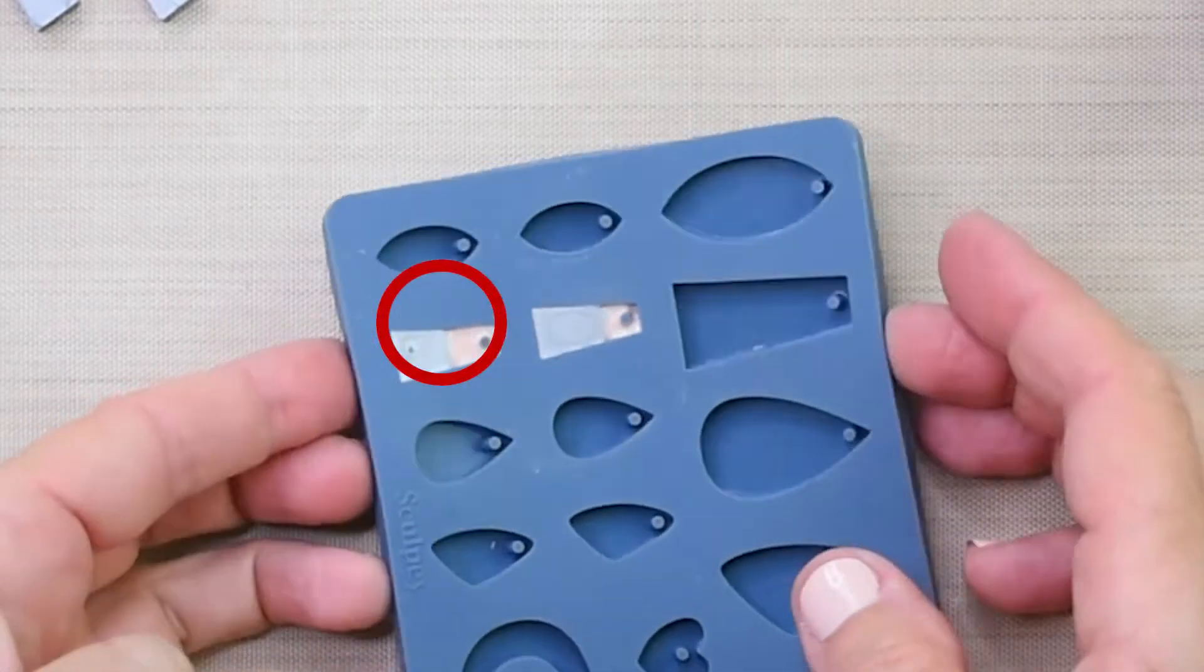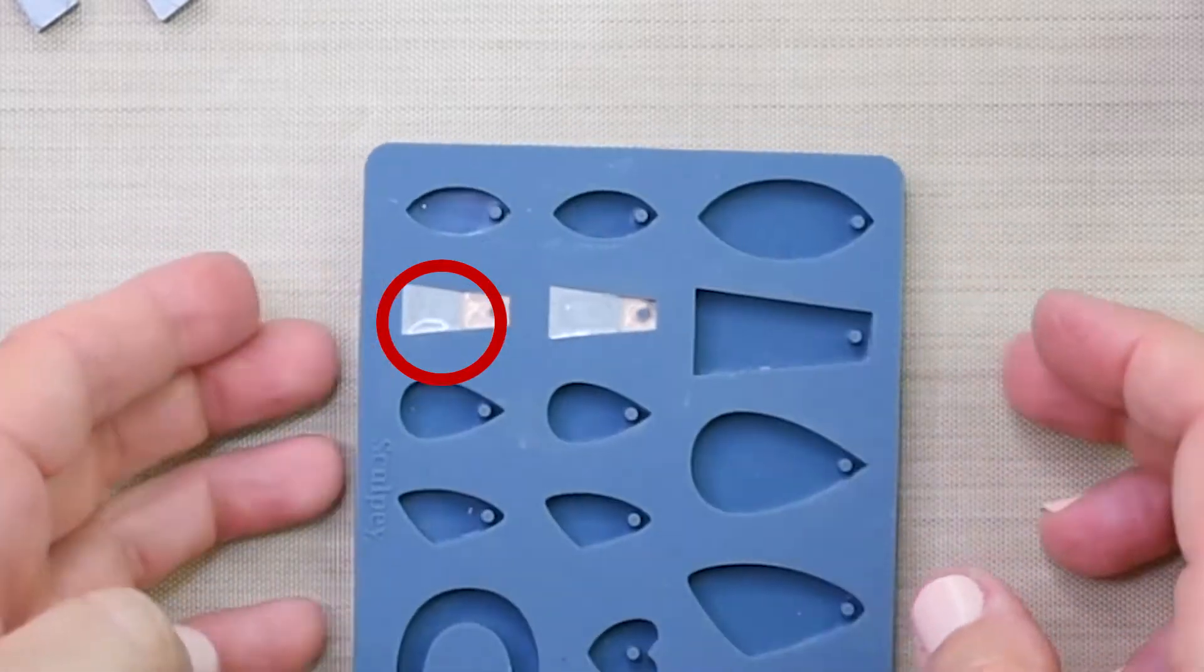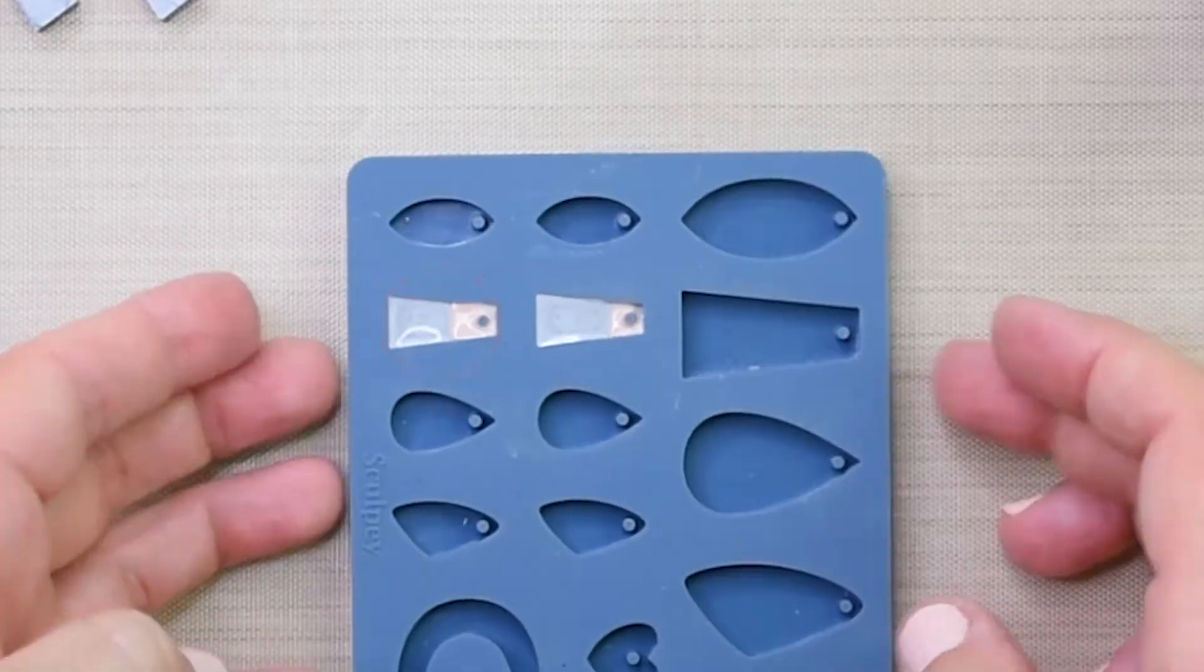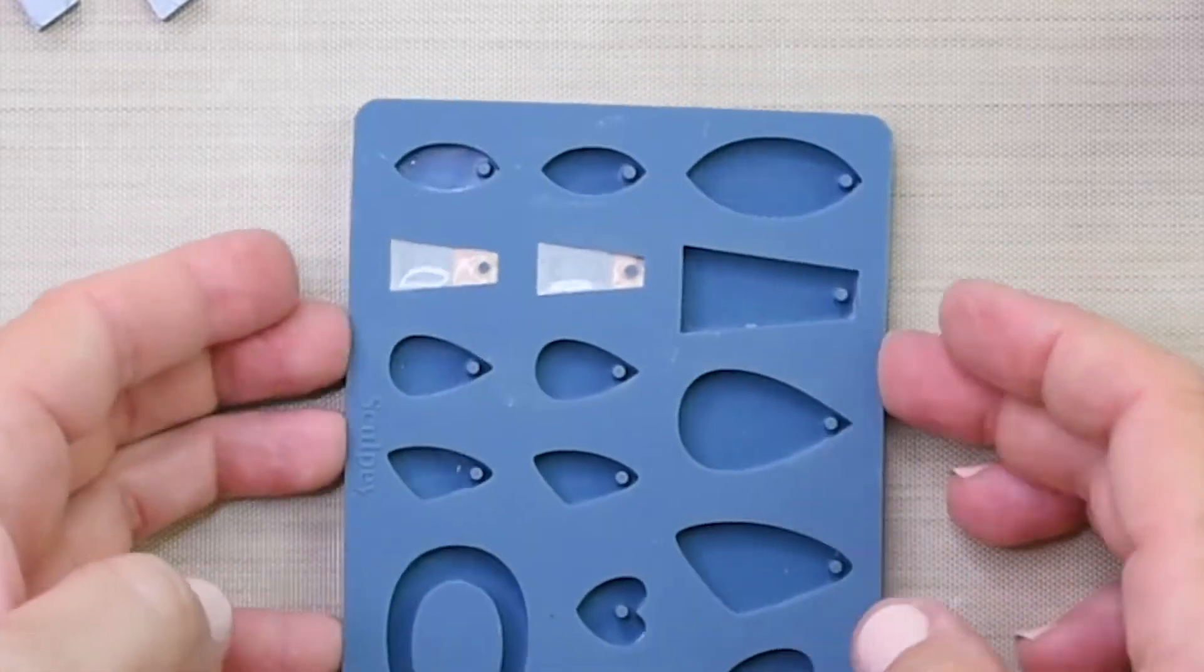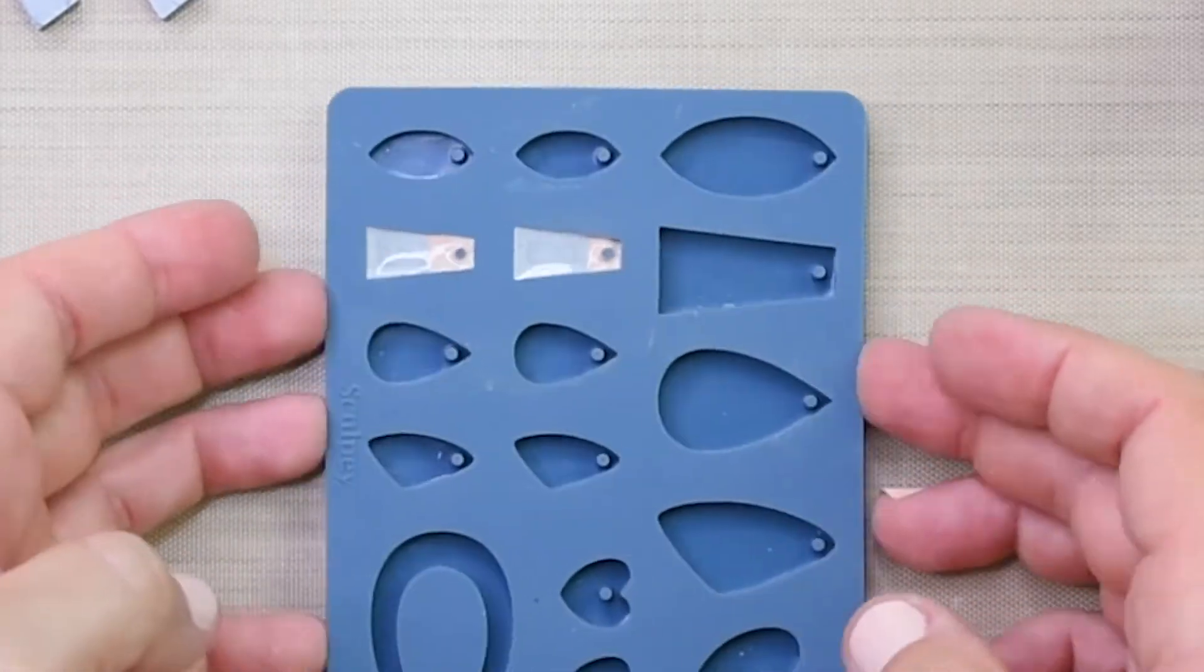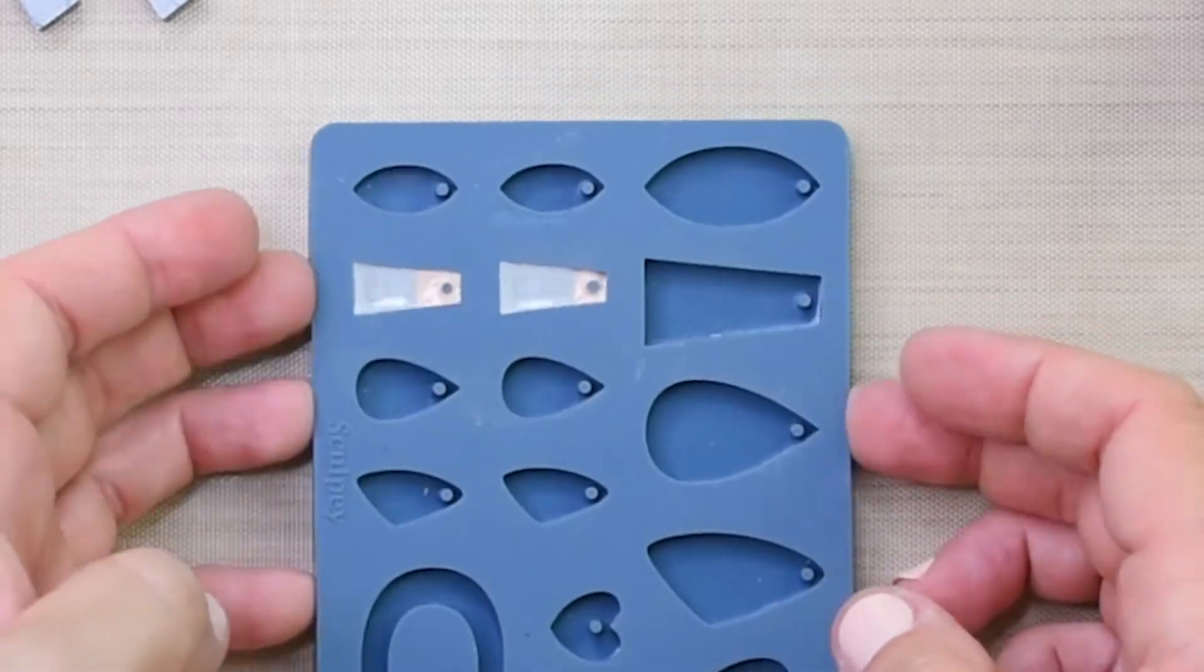Now see that little bubble right there? I'll just tap my mold and that bubble is popped. That's one method for tapping out air bubbles from the mold, and I always do this. I do it until I can't see any more bubbles come up.